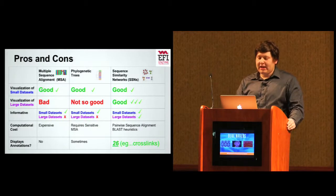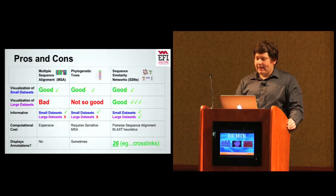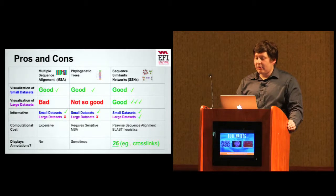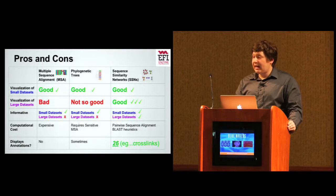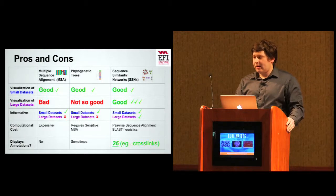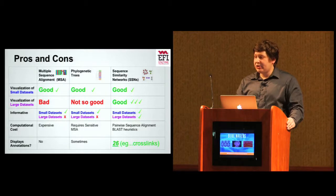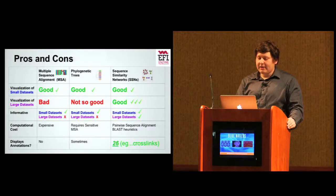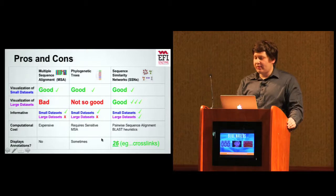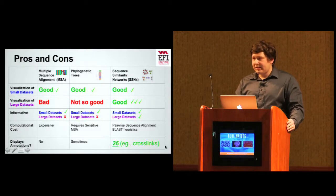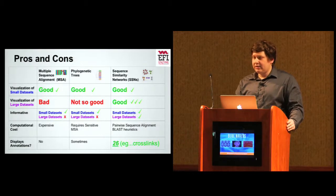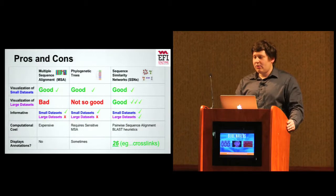To create multiple sequence alignments and phylogenetic trees, it's a high computational cost. Phylogenetic trees require a sensitive multiple sequence alignment. However, sequence similarity networks do a pairwise sequence alignment and use BLAST heuristics to reduce the computational cost, so they're a lot less costly to generate. When a biologist is looking at a group of proteins, they want to see annotations to help them understand what's going on, get information about what the proteins are in the clusters. Multiple sequence alignment and phylogenetic trees don't provide that. But sequence similarity networks provide 26 different types of annotations, such as where the protein comes from, what organism it's in, what it does, cross-links to other databases. It provides a rich amount of information.